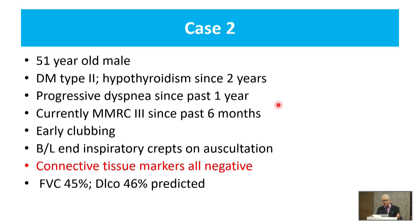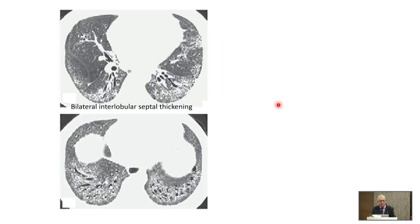This patient did not have any comorbidities and was diagnosed as IPF. We will discuss treatment. Case 2 was a 51-year-old male diabetic with hypothyroidism, progressive dyspnea, early clubbing, and expiratory crepitations. Connective tissue markers were negative. Vital capacity was 45% and diffusion capacity was 46%.